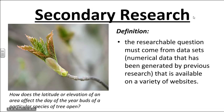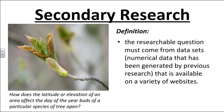Secondary research is when you're doing research and the data has already been collected. There are thousands of data sets out there. Anything paid for by the U.S. government is free and publicly available on a variety of websites. For example, we could look at how latitude or elevation of an area affects the day of the year that buds on a particular species of tree open — and we're finding that day is changing based on the temperature of the earth.